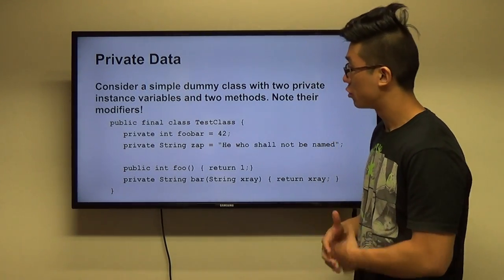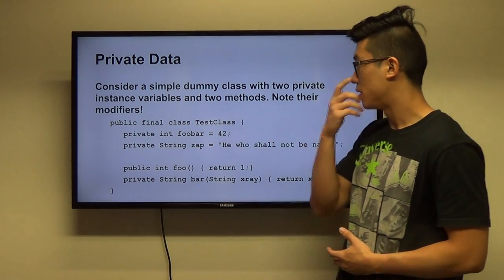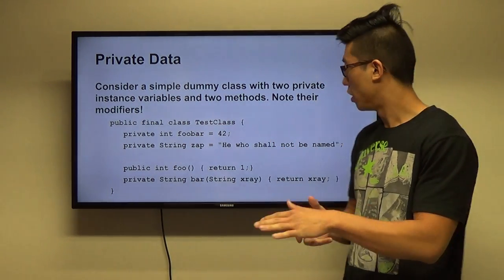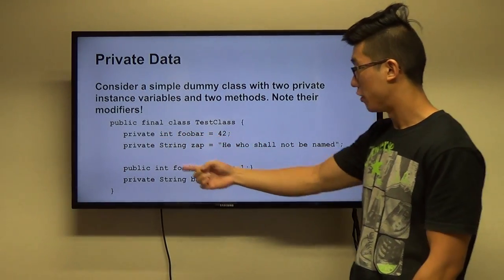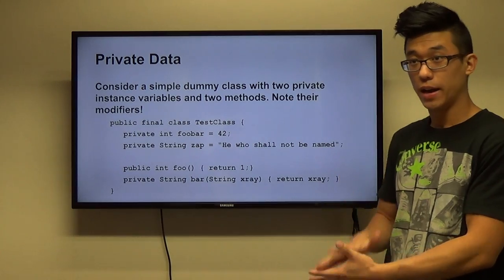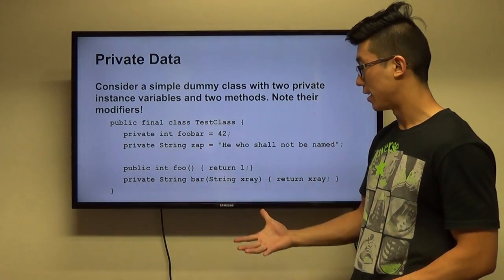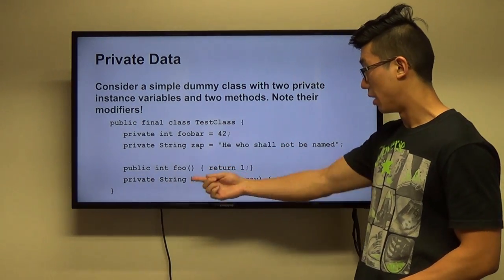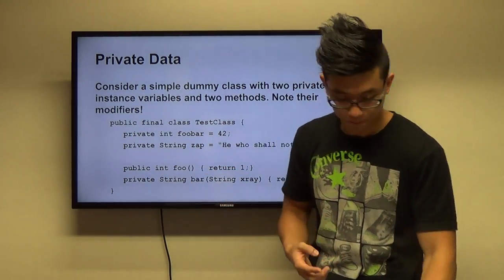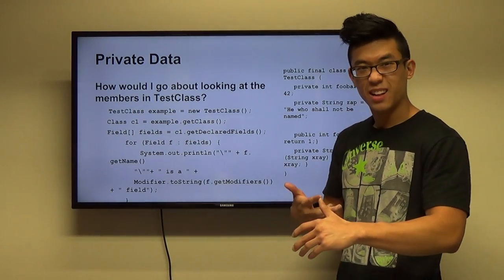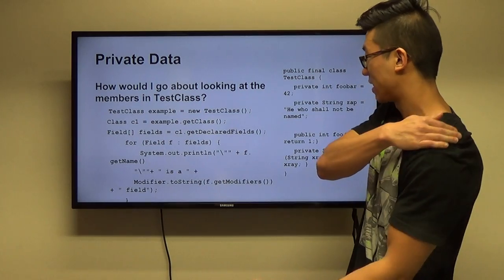Now moving to more interesting stuff — I made a dummy class with two private instance variables and two methods. Note their modifiers: I have `private int fooBar` and `private String zap`, so this is private data. The whole point of making it private is so you cannot see these members from outside the class. Then I have a `public int foo` and a `private String bar` as some easy methods to look at.